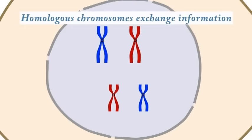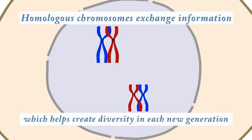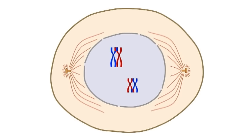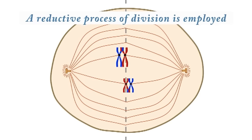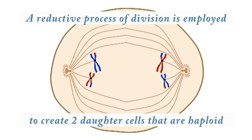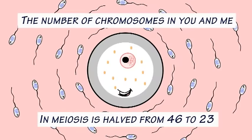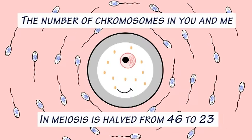Homologous chromosomes exchange information, which helps create diversity in each new generation. A reductive process of division is applied to create two daughter cells that are haploid.